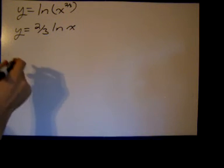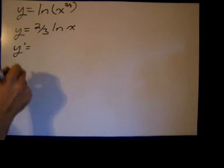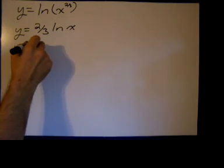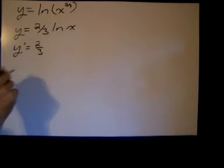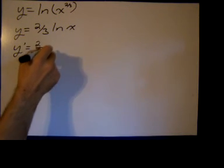So I'm going to take the derivative now. Constants are just multiplied, so we have two-thirds times the derivative of ln of x.